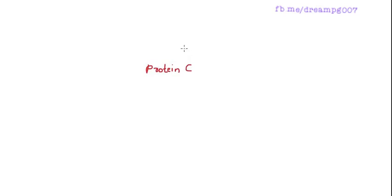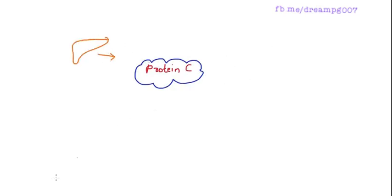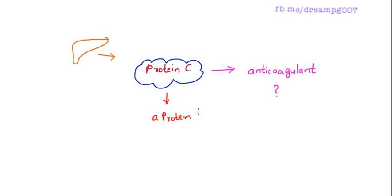Protein C is formed in the liver. Protein C is actually an anticoagulant. When protein C is activated, this activated protein C inhibits the activation of clotting factors — specifically clotting factor 5 and clotting factor 7 — and coagulation does not take place.